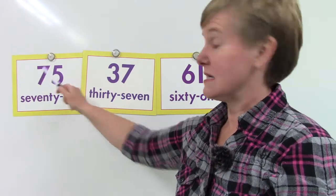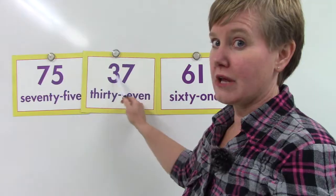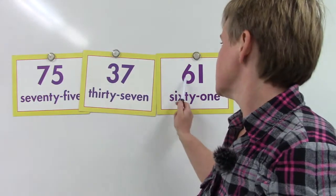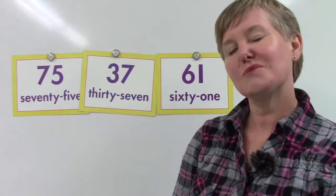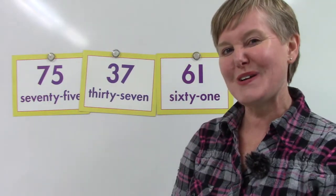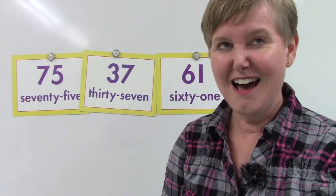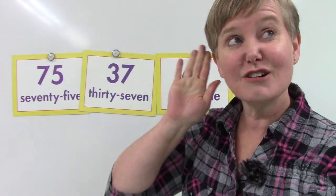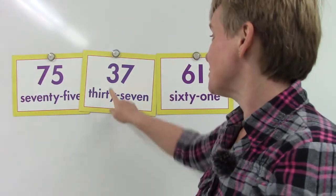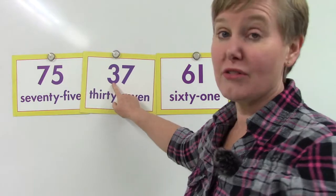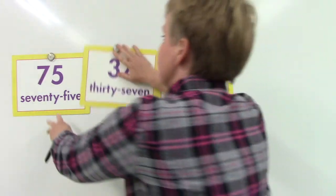Seven or seventy, three or thirty, six or sixty. Which one is smaller or the smallest? Yes, it would be the three, or the 30 in 37.